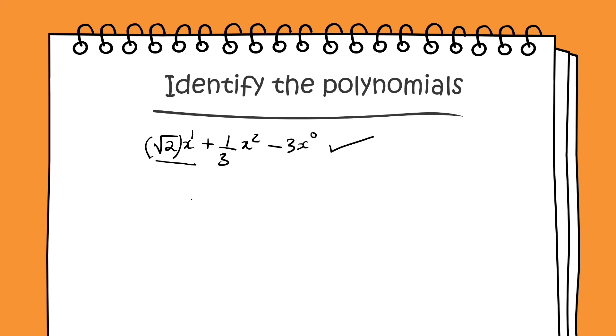One more example, I would take x power 5 plus x by y power 3 minus 6x square. Is this a polynomial? It is not a polynomial because the power of y here is minus 3, because x by y power 3, I can rewrite it as x into y power minus 3. Therefore, this expression is not a polynomial.